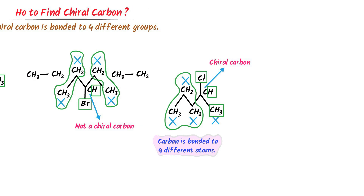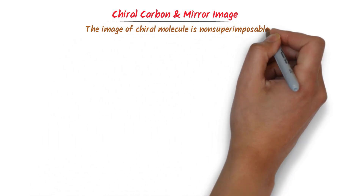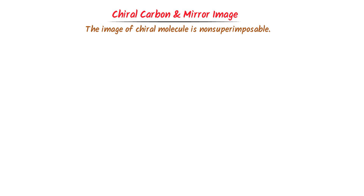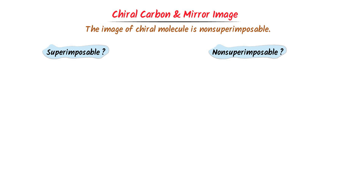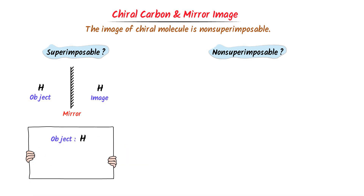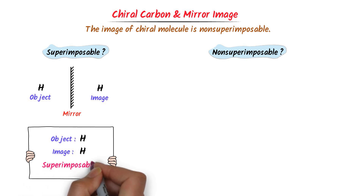We will learn one important concept: chiral carbon and its mirror image. Remember that the image of a chiral molecule is always non-superimposable. Consider this object H — I place a mirror in front of it and I get this image. I take this object H and also its image H. If I place the object and its image together, they are superimposable on each other. Thus, we call it a superimposable image.